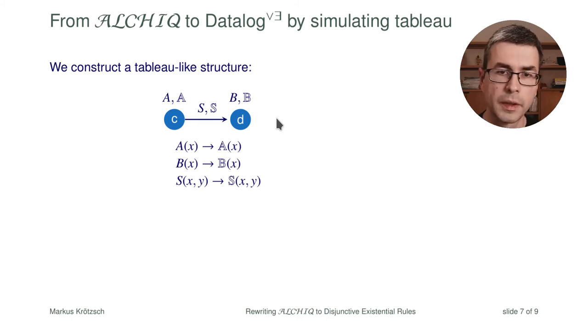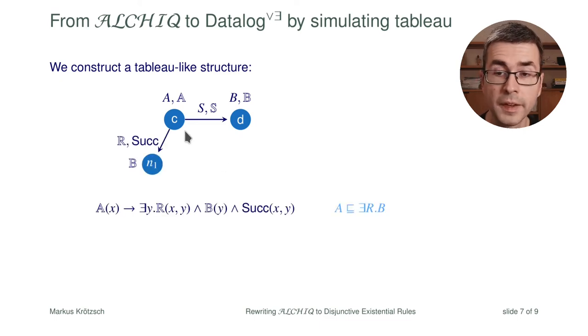Then the tableau works as usual. We conclude new information based on the ontology and the structure that is given. In some cases it will be necessary to expand the tableau. So sometimes some new node has to be introduced in the tableau. This mainly occurs if we have axioms like this one where it says every A has an R successor that is a B, which in our case translates into such a rule here. And this rule has an existential quantifier. This existential quantifier to be satisfied requires the existence of such a new element.